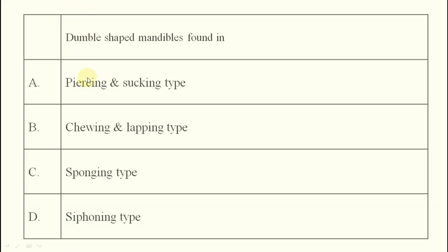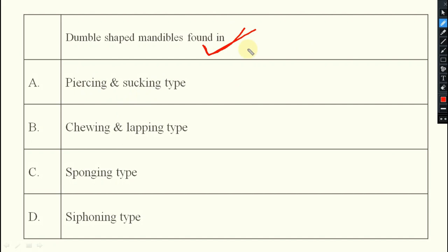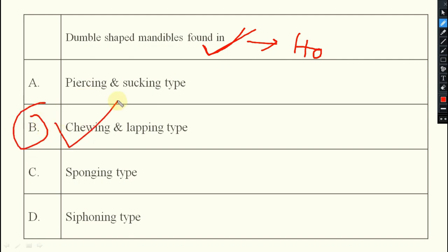First question: dumbbell-shaped mandibles are found in which insect? The answer is adult honeybees. The mouth part type is chewing and lapping type of mouth parts.